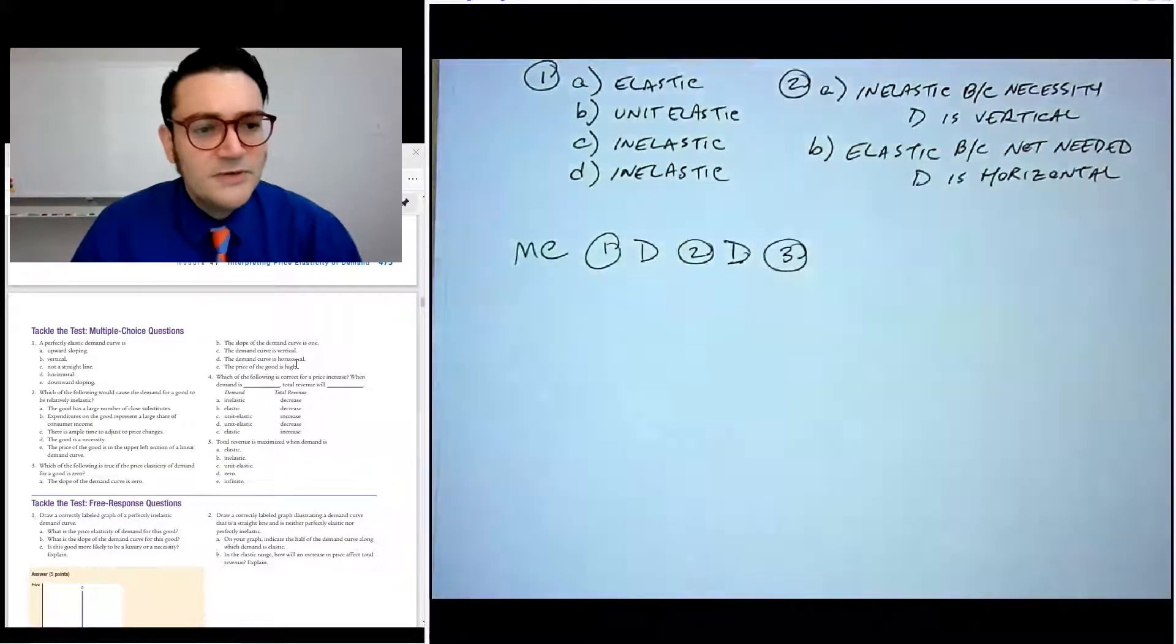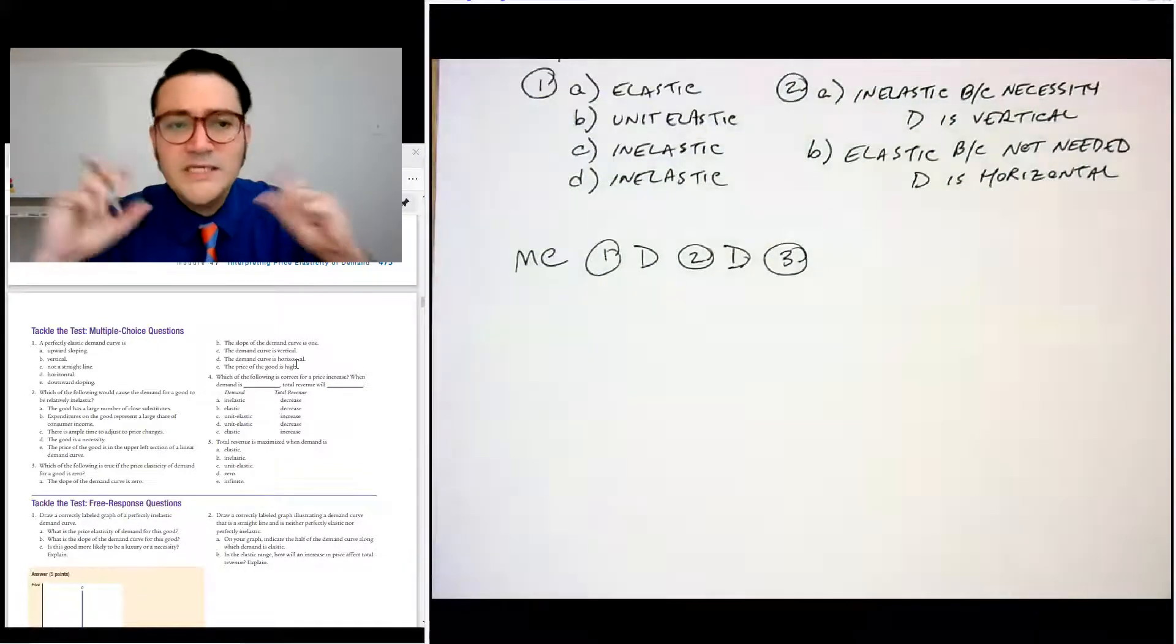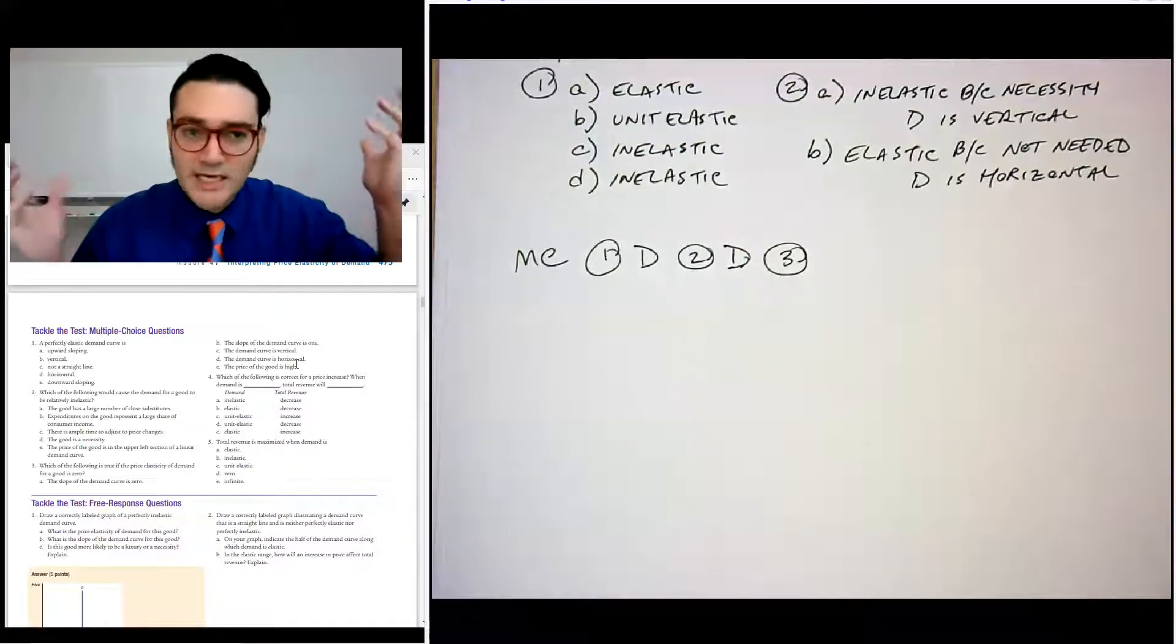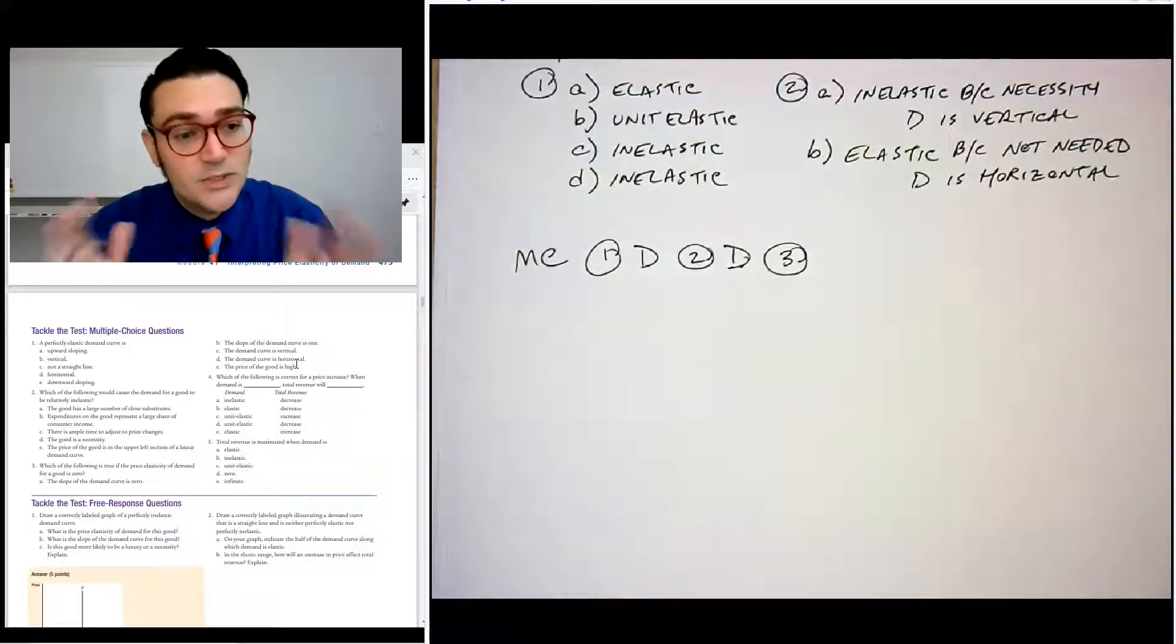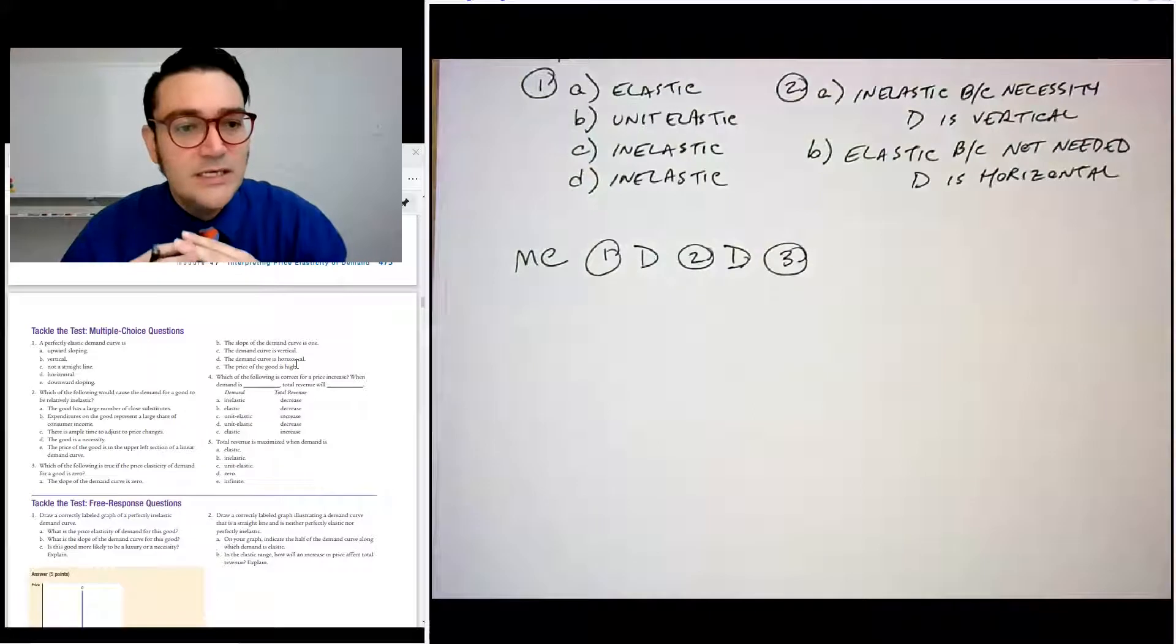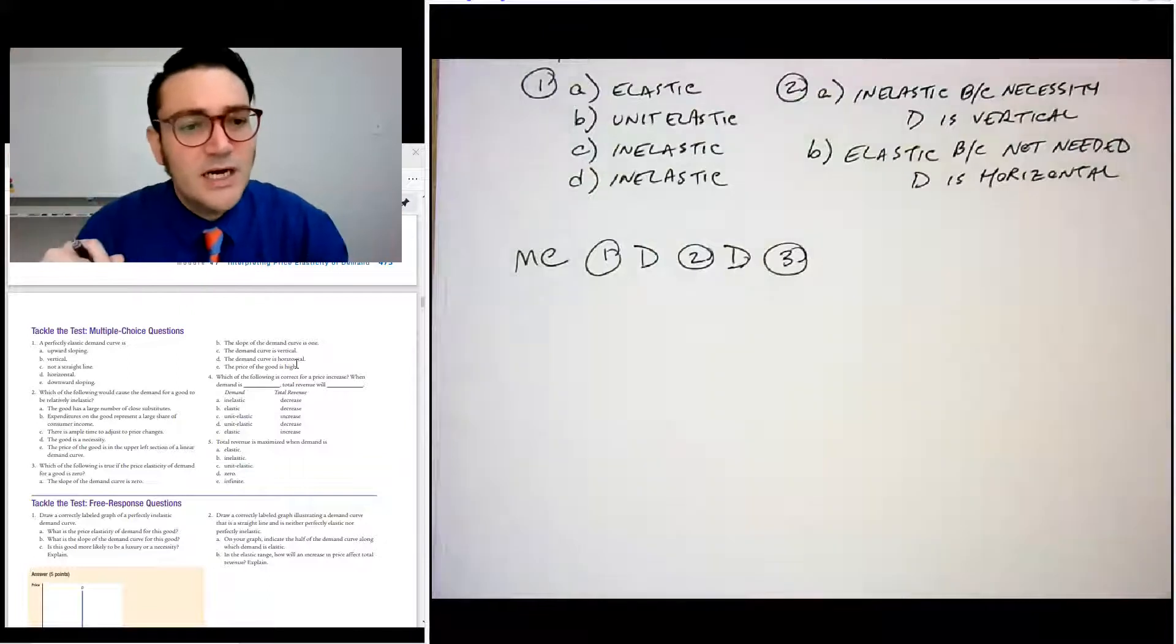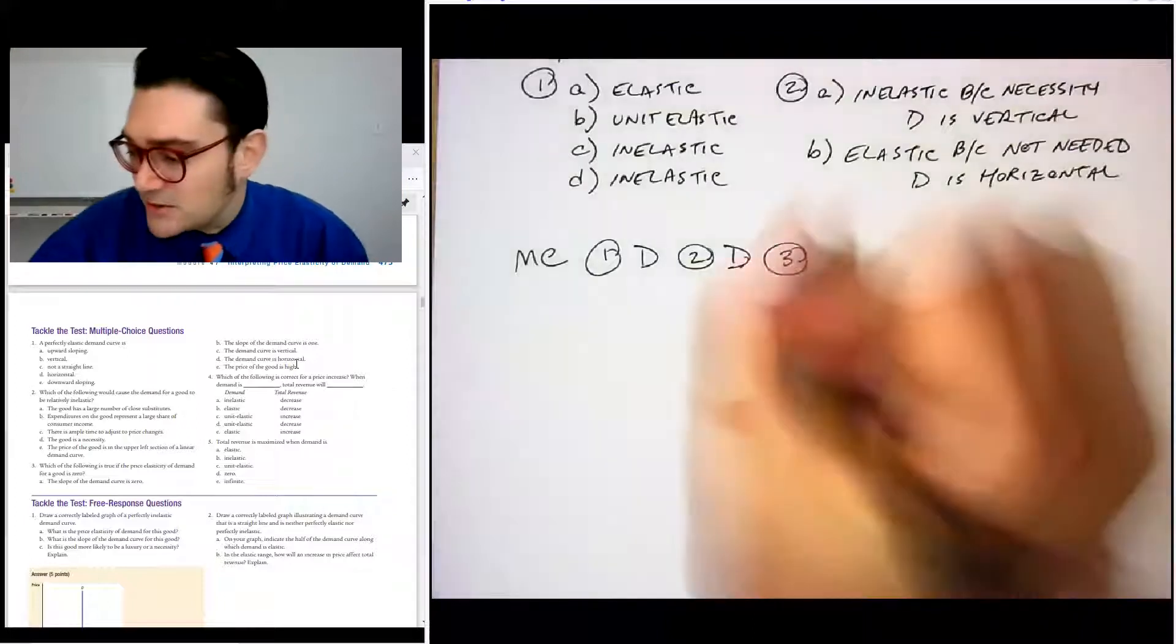Number three, which of the following is true if PED is zero. Slope of the demand curve zero? No. So PED being zero means that the quantity change isn't occurring. Zero percent change in quantity divided by any change in the price. So PED being zero means it's perfectly inelastic. The slope of the demand curve being zero would be a horizontal line, and that's an elastic curve. So A is not correct. Demand curve is vertical? That's the correct answer because it's perfectly inelastic. So C is the correct answer.